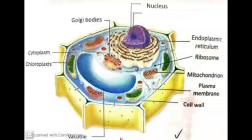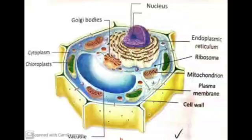Like mitochondria, plastids have their own genetic material — DNA and proteins. Now the next and last cell organelle is vacuoles. Vacuoles are storage sacks which store solid or liquid materials.